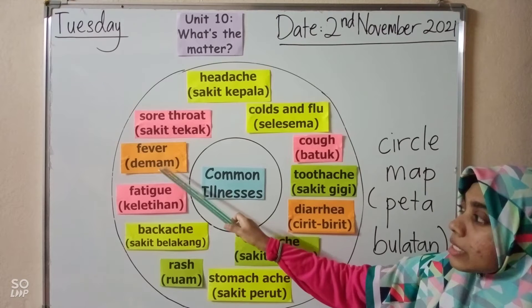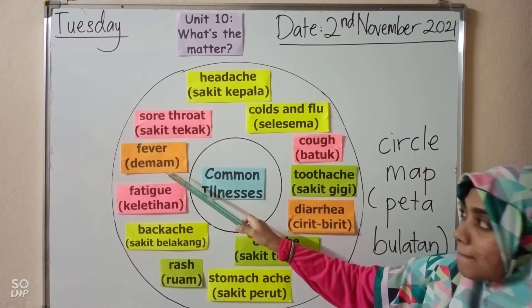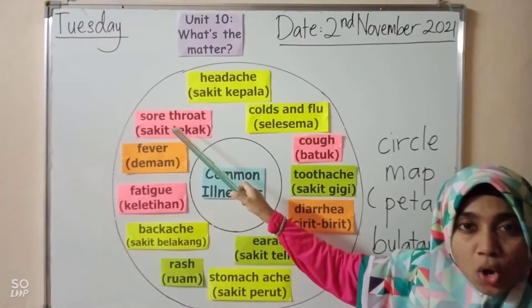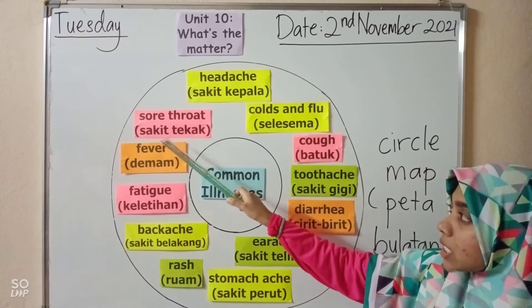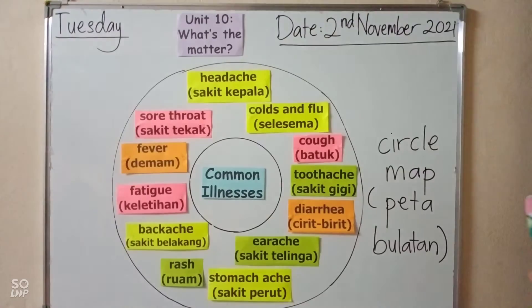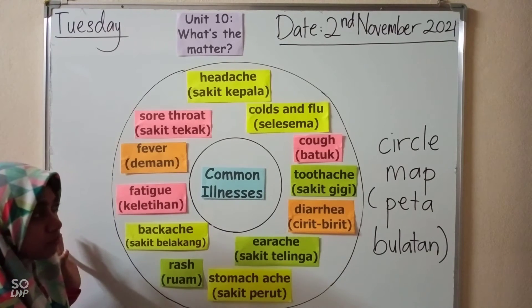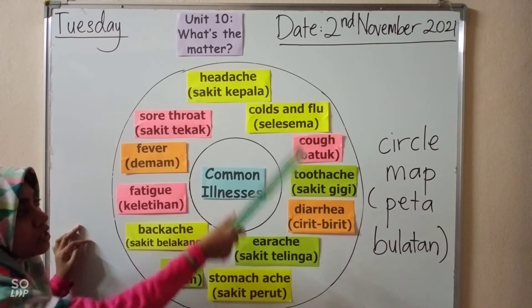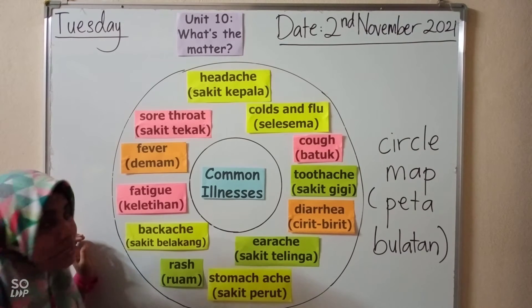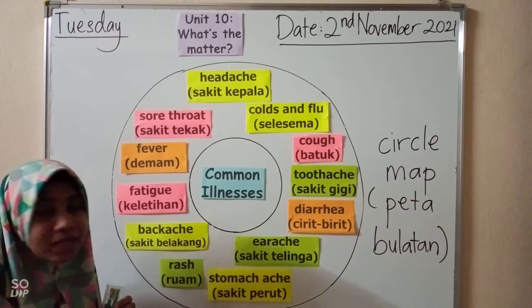Fever — demam. Sore throat — sakit tegak. This is a circle map to list down all the common illnesses — not all, but some, okay?